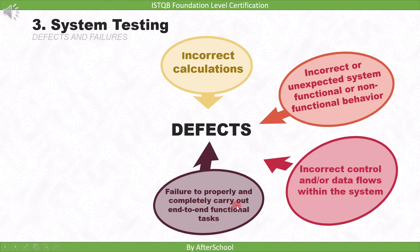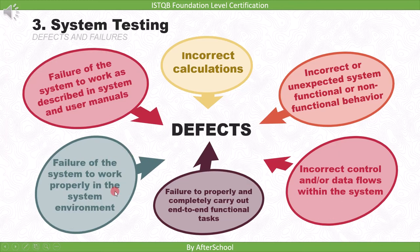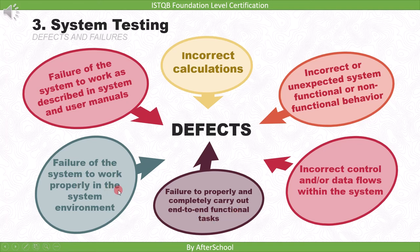Further system testing defects include: failure to properly and completely carry out end-to-end functional tasks, since system testing involves providing input and checking output end-to-end; failure of the system to work properly in the system environment, found by testing the complete system; and failure of the system to work as described in system and user manuals, which is similar to the incorrect calculation defect. These were the six examples of defects found during system testing.